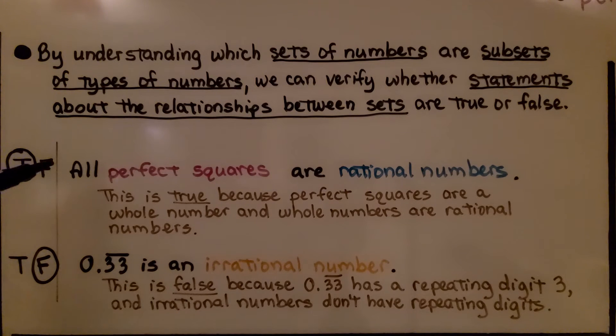Here it says all perfect squares are rational numbers. Well this is true, because perfect squares are a whole number, and whole numbers are rational numbers.